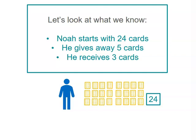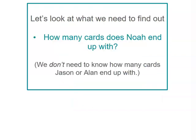That's his 24 cards. He gives away five cards, and we know he also receives three cards. So let's look at what we need to find out. We need to find out how many cards Noah ends up with. We don't need to know Jason or Alan's card total at the end — we don't care what they've got.